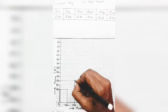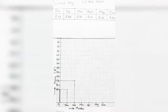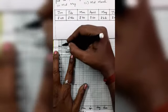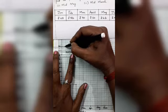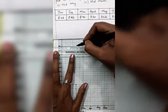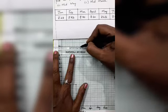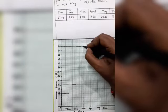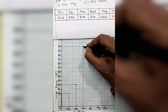In the month of March, the price of the onion is rupees 70, so straight across to March, draw a dotted line vertically. Keep the scale, straight across to 70, and draw a dotted line horizontally. Mark a point where the two dotted lines meet.